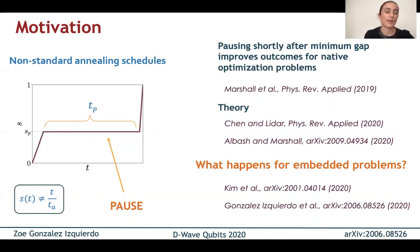It has been shown for native problems that an appropriately located pause can boost the probability of success. In particular, when a pause is introduced shortly after the minimum gap, where transitions are more likely to happen, we give the system time to relax back to the thermal state, which at this point has enough overlap with ground state of the problem Hamiltonian that this increases our probability of success. There has also been some recent work on the theory side of this effect and how and when pausing is beneficial. And now we are starting to look at how this works for embedded problems.